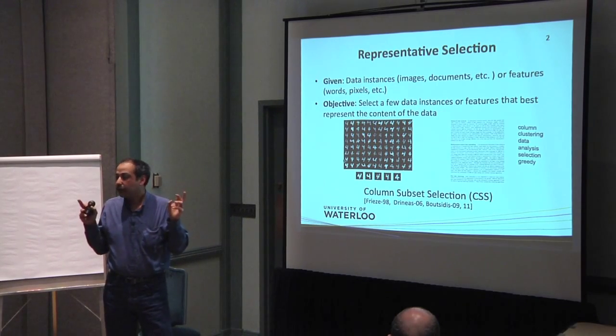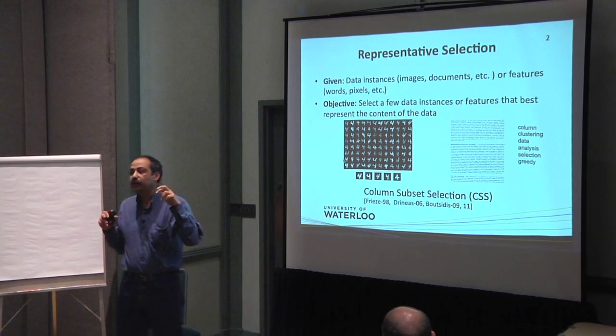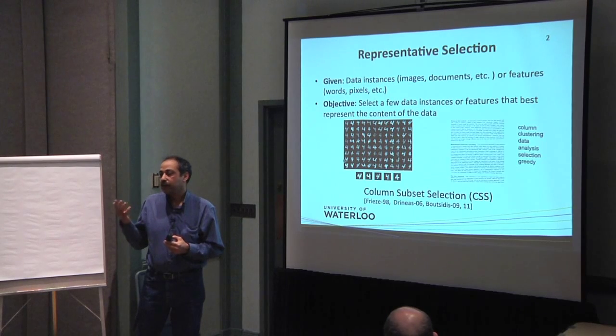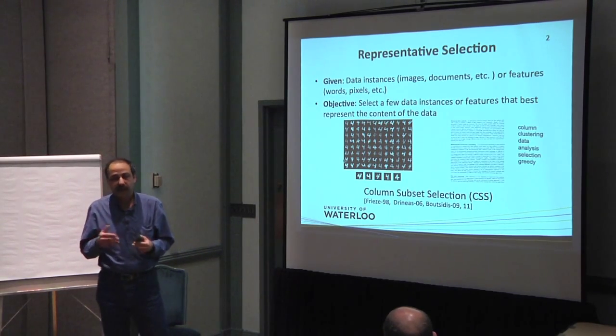For example, if you represent your data matrix such that rows are variables or features and columns are data points, selecting a subset of rows is basically selecting important variables, it's feature selection. And selecting a subset of columns is selecting representative data.